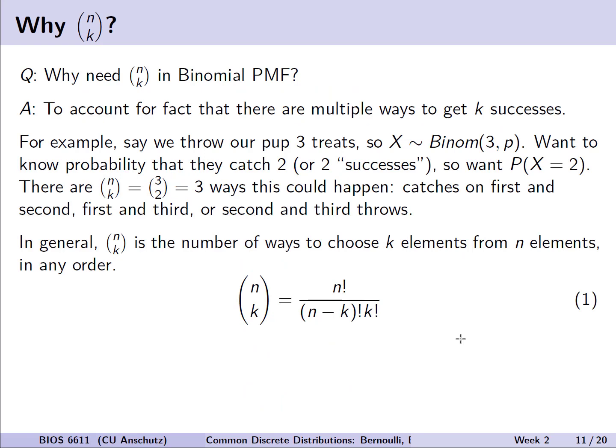You might be wondering, what is this n choose k binomial coefficient term we see in the binomial PMF, and what's its definition? Let's address both of those questions and how I can calculate them by hand. First, the reason why we actually need this binomial coefficient term is to account for the fact that there are multiple ways we could get k successes out of n different trials.